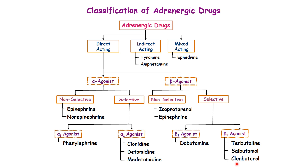To understand the effects of these drugs, we must understand the biological activity of their receptors. Alpha-1 agonists mainly subserve vasoconstriction because alpha-1 receptors are found on blood vessels. Alpha-2 agonists are mainly inhibitory in nature because they are found on adrenergic neurons. Beta-1 receptors are mainly found in the heart and kidney; in the heart, they are responsible for increasing heart rate and force of cardiac contraction.